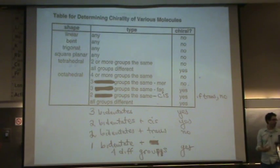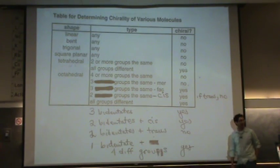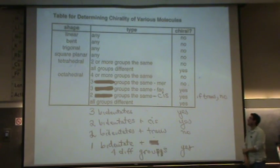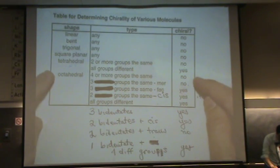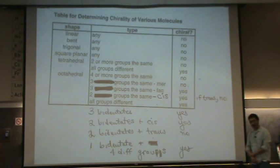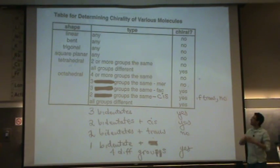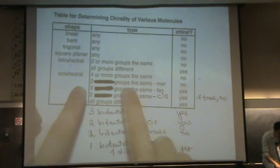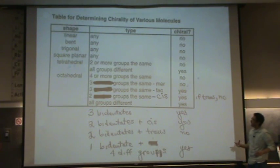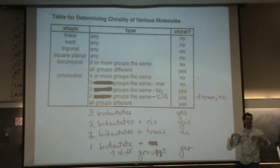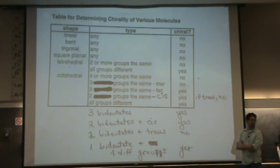Tetrahedral is the first shape where we start to see chirality. Then we go to octahedral — that's the last shape we'll look at, and by far the most complicated. If you have four or more groups that are the same, it will not be chiral — four or more ligands on the metal center that are the same will not be chiral. If you have three groups the same and the arrangement is mer, mer is not going to be chiral.